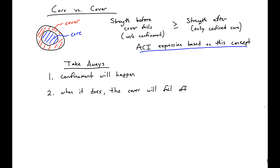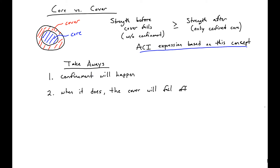When confinement does happen and your core concrete goes into higher strengths and higher ductilities, your cover is going to fall off. The final point is that we need to ensure that the confined section is stronger than the original section, or else there's going to be a brittle failure.